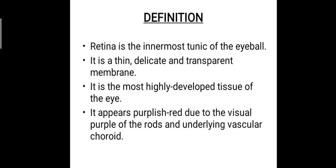The retina appears purplish-red due to the visual purple of the rods and the underlying vascular color. We will be discussing what rods are later, and you already know about the vascular choroid that we discussed in the middle coat.